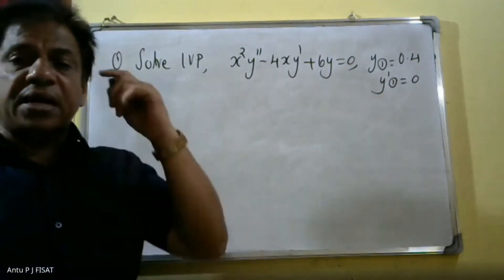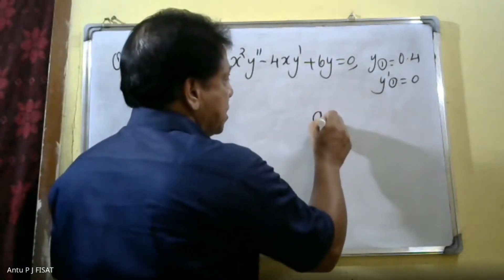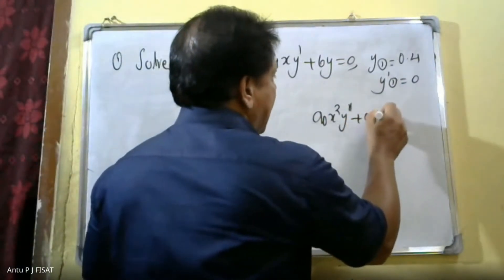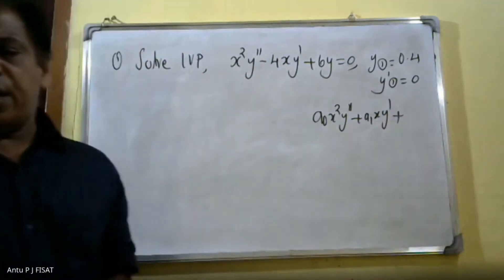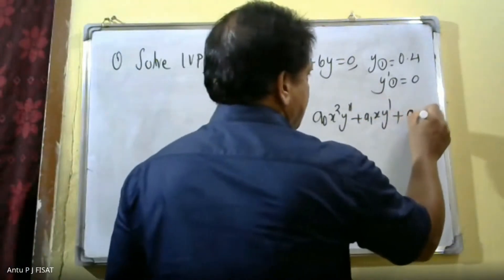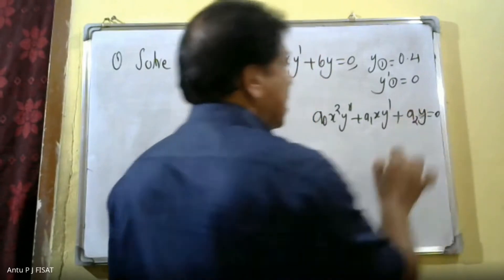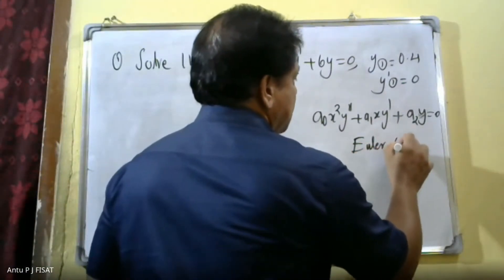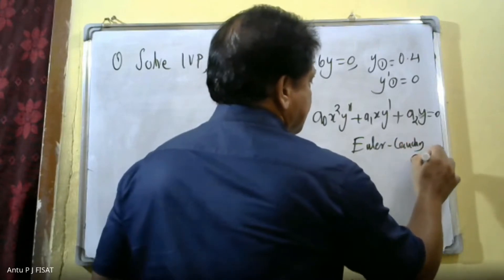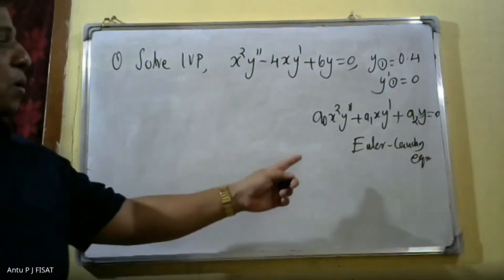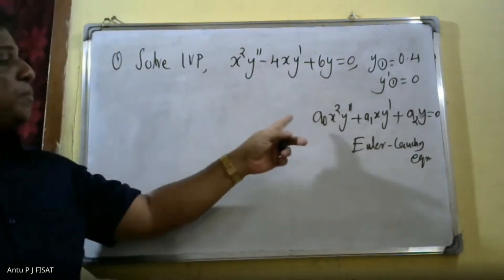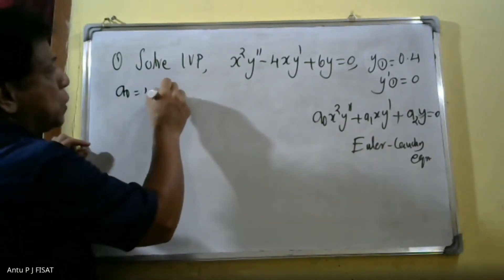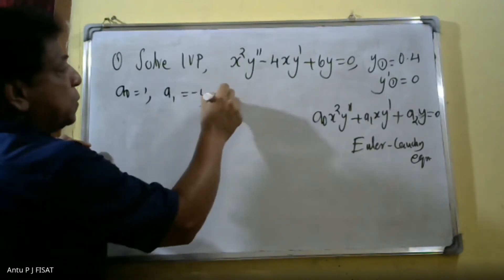When we compare with the standard form of the Euler-Cauchy equation — a₀x²y'' + a₁xy' + a₂y = 0 — and compare it with our problem, we get a₀ = 1, a₁ = −4, and a₂ = 6.